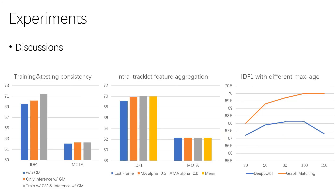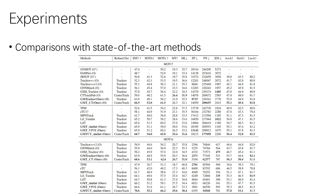Then, we discuss some details, such as the consistency of training and inference, the intra-tracklet feature aggregation methods, and the influence of when we delete the lost tracklets, called max age. The comparison with other state-of-the-art methods also shows we have better association performance, no matter under the online setting or offline setting.